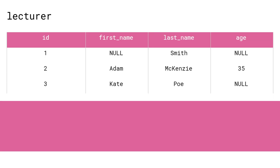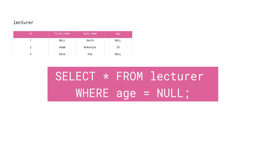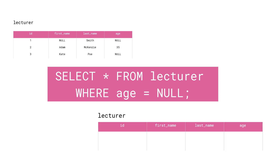We'll try to find Lecturers with Null ages. We'll use the following query: SELECT * FROM Lecturer WHERE age = NULL. When we run the query, we'll get an empty result set, even though we wanted to see the two Lecturers that have Nulls in the age column. That's because Null does not work with equals and not equal to operators.